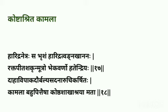Let's see about the Lakshanas of Kostashrita Kamala. The shloka mentions: Haridra Netra, Haridra Thvak, Haridra Nakha, Haridra Anana — the eyes became turmeric colored, the skin is yellowish in color, nails also became yellowish, and the face became turmeric colored. The areas of yellowish discoloration are mainly Netra, Thvak, Nakha, and Anana.